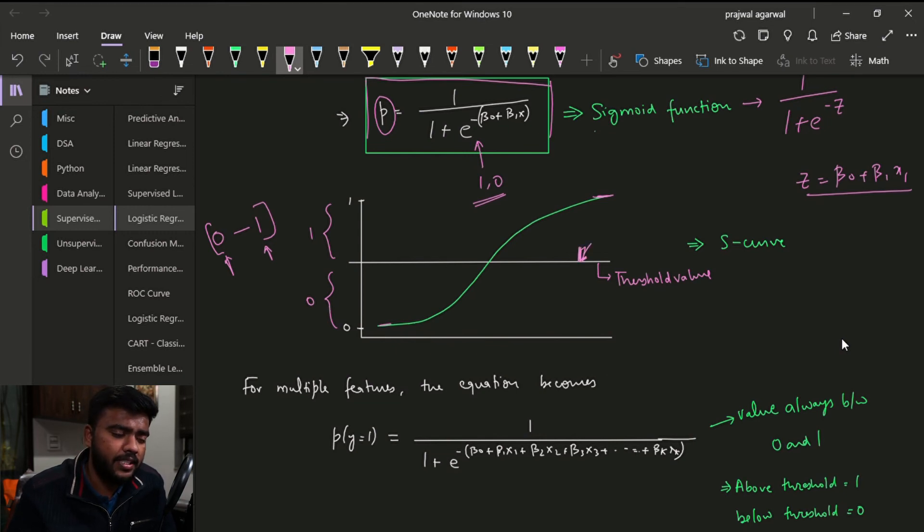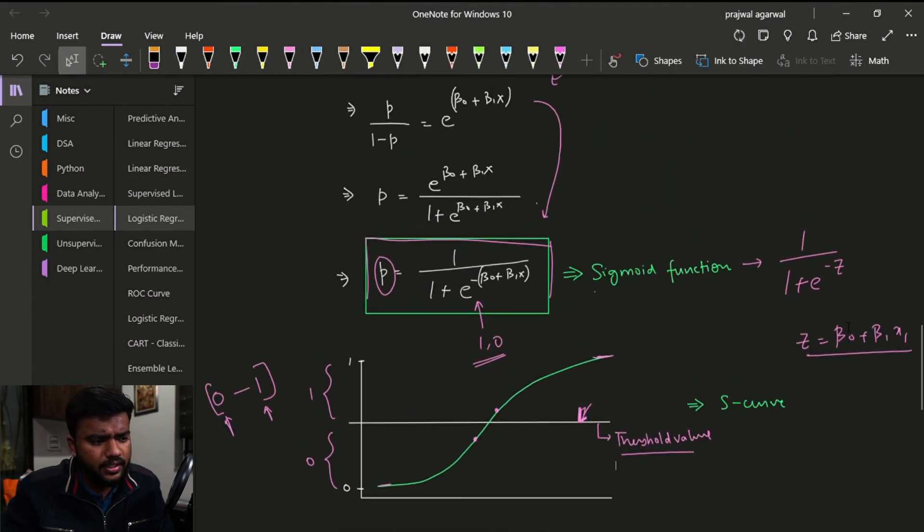Now when we specify a threshold line, we just make it very clear that if a point is lying above the threshold line then we will classify that point as yes, and if a point is lying below a threshold line then we will classify that point as zero. So this was about the threshold line.